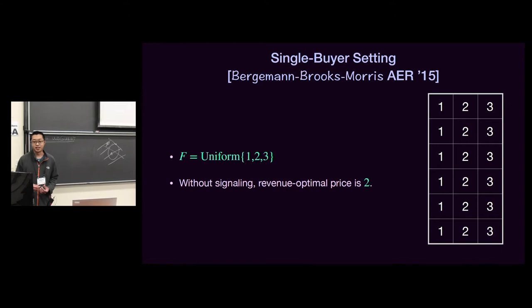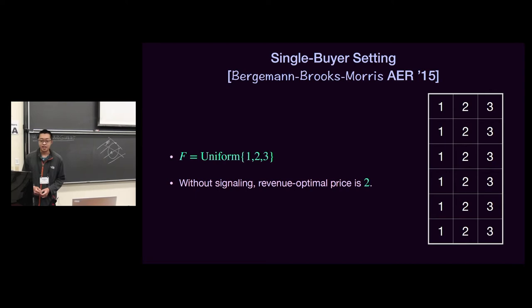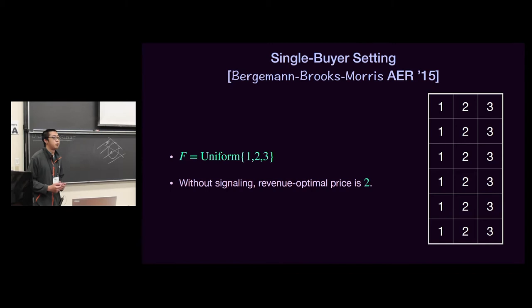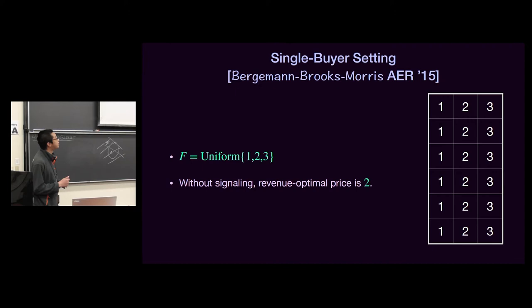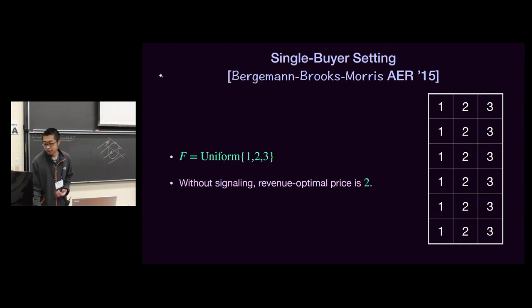The single-buyer setting of our work has been done by the great work of Bergemann, Brooks, and Morris. We first look at an example in the single-buyer setting. The buyer's valuation distribution is uniform on one, two, and three. If there's no signaling, then the revenue optimal price would be two, because if the seller sets the price to two, the buyer will buy the item with probability two-thirds, giving expected revenue four over three. We can picture the distribution as a rectangle, and the buyer's value is a random square in this rectangle.